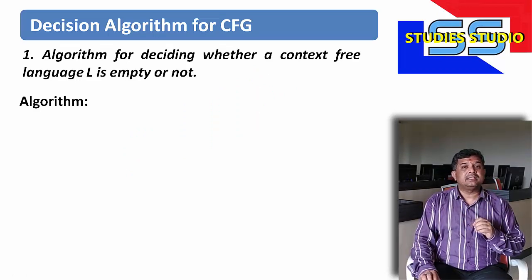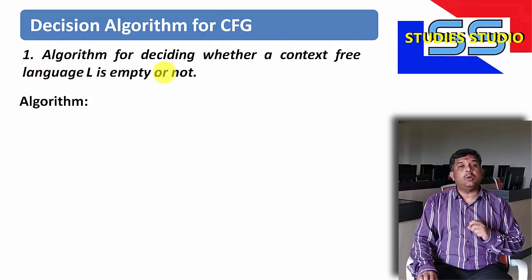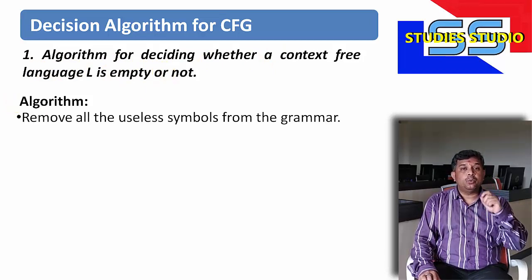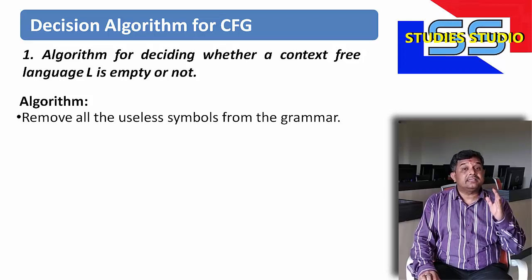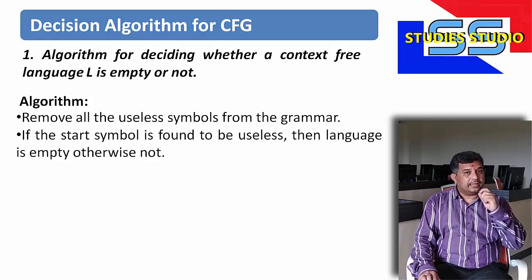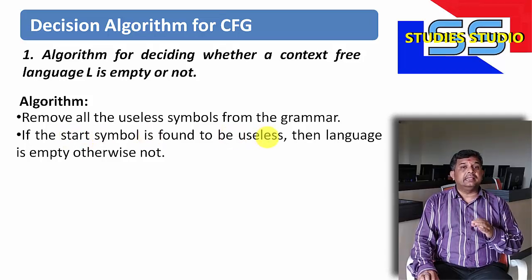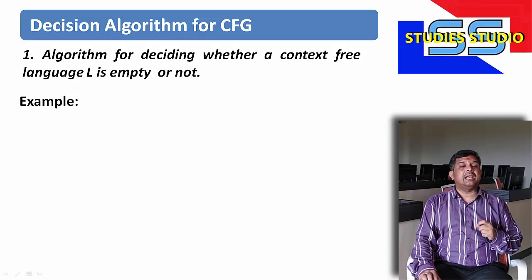The first algorithm is for deciding whether a context-free language L is empty or not. For this algorithm, what we need to do is remove all the useless symbols from the grammar. We have already discussed useless symbols — a useless symbol is one that doesn't derive any string of terminals. If the starting symbol is found to be useless, then the language is empty; otherwise not. Let us see this with the help of an example.